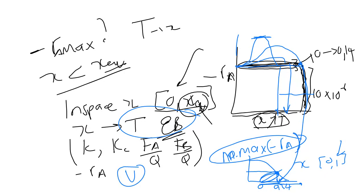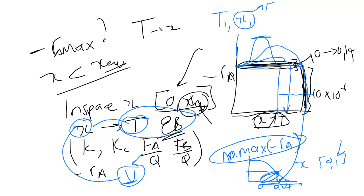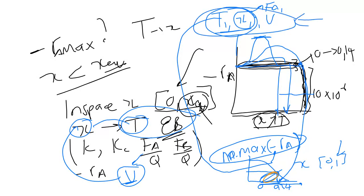Once I find the maximum rate, it corresponds to a specific x and a specific temperature, which are tied together by the adiabatic energy balance — they are not independent. The only remaining unknown in the mole balance is then the volume. So I've solved all three unknowns for the first reactor: operating temperature, conversion/molar flow rate, and volume.